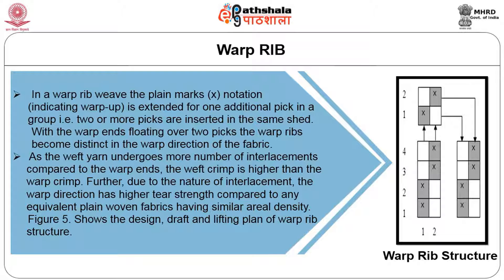As shown in the figure, there are two warp ends — warp end 1 and warp end 2 — and the plain marker in warp end 1 is extended for two picks, and similarly for warp end 2 the interlacement is extended over two picks. For this weave, two heel shafts are required. The threads of warp end 1 are drawn in heel shaft number 1, and the ends of warp end 2 are drawn in heel shaft number 2. The lifting plan is very similar to the basic design.